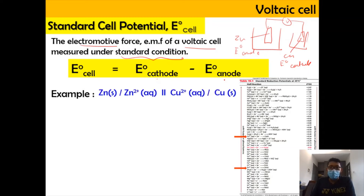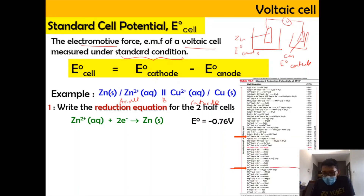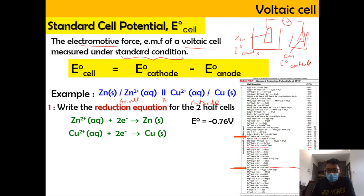For example, at the anode we have Zn → Zn²⁺, and at the cathode we have Cu²⁺ → Cu. First, we write the reduction equations for both half-cells. Zn²⁺ + 2e⁻ → Zn has E⁰ = −0.76 V, and Cu²⁺ + 2e⁻ → Cu has E⁰ = +0.34 V. These values are taken from the SRP table.